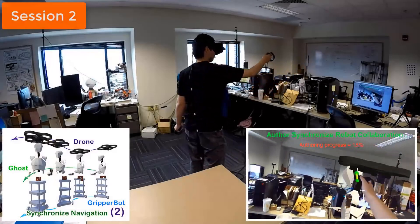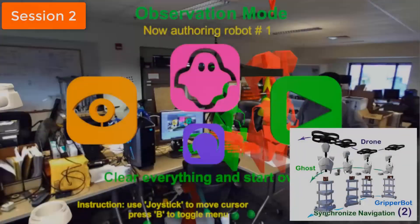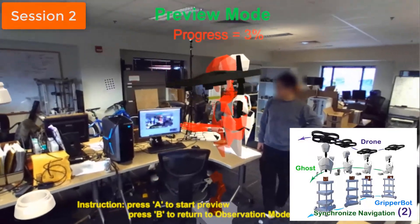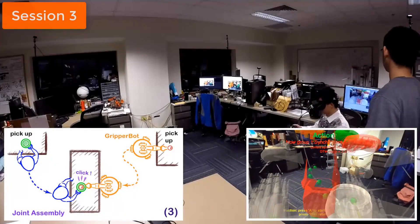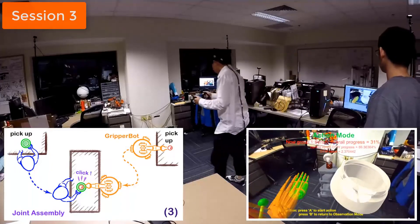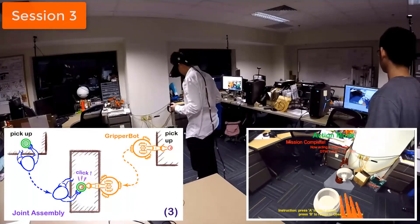In the second session, user authors a human following synchronized task to evaluate robot interaction using a virtual drone and a ground robot. The last session evaluates the overall usability of our system through a joint assembly task.